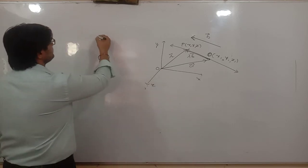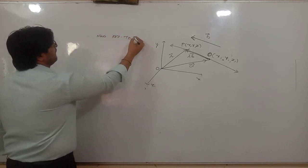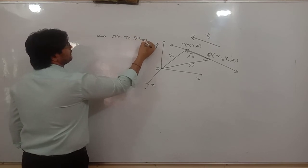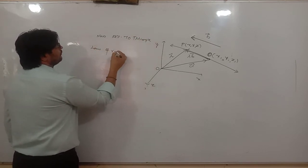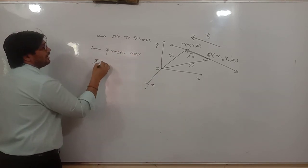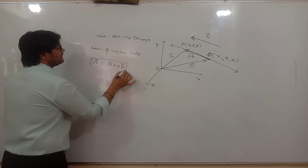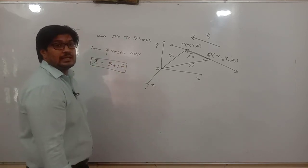According to the triangle law of vector addition, what is this? Vector R is equal to A plus lambda B. This one is the vector equation.